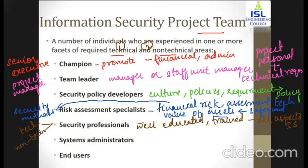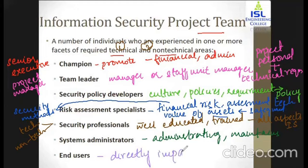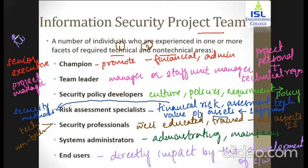The next is system administrators — people with primary responsibility for administering the system: ensuring hardware is working properly, taking different hardware updates, and handling any bugs. Then the last one is end users — the persons that are going to use the system and will be directly impacted by the development of the software. These are the different roles within the project management team.